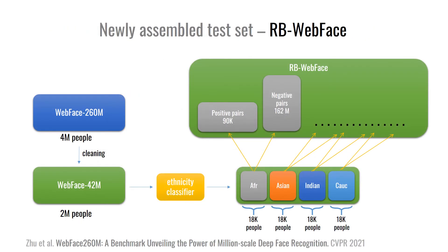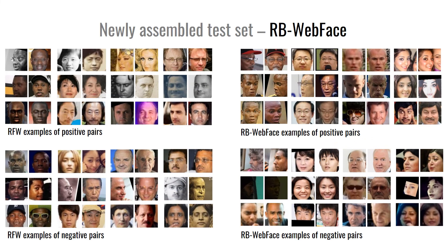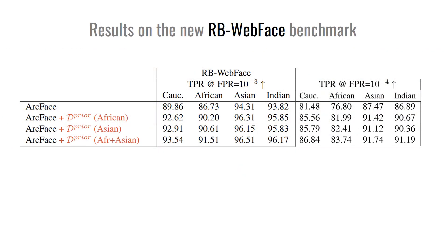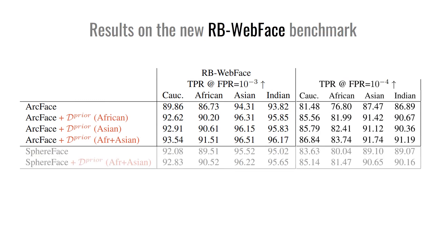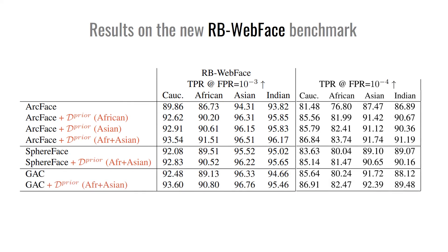Our dataset features six times larger number of people than RFW and is free of potential selection bias. Since RBWebFace is a more challenging benchmark, the same comparison of the baseline versus our approach shows the quality difference in a more expressive fashion. This implies that the proposed pre-training benefits other state-of-the-art pipelines such as SphereFace and GAC, and hence can be used as an ad hoc improvement of an arbitrary algorithm.